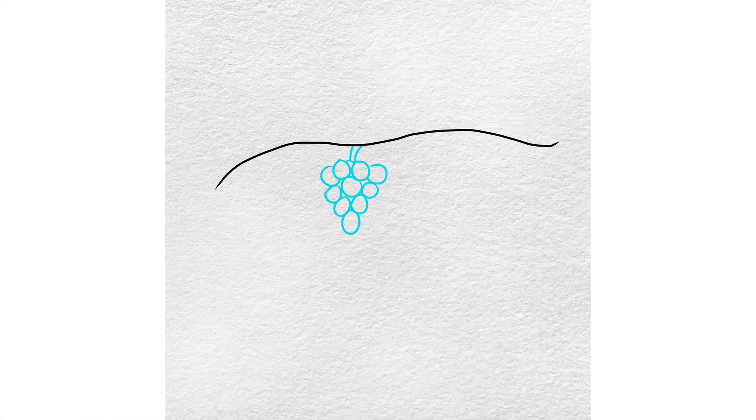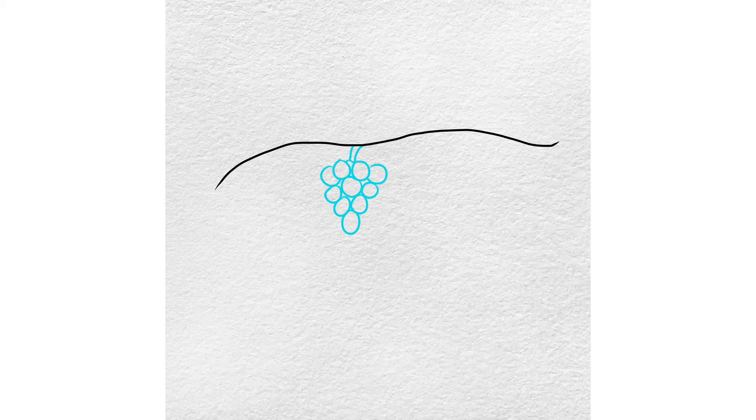To draw the grapes, draw a small stem connecting from the vine you just drew. Then, add small circles below which will represent each grape. The grapes should form the shape of an inverted triangle.